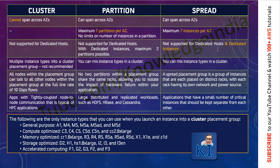In every AZ, maximum seven you can launch and every instance would be placed in a different physical rack — that is your spread type. When will you use this? Applications that have a small number of critical instances that should be kept separate from each other. You don't want two components to fail at the same time, so you keep each and every instance on a separate physical rack.